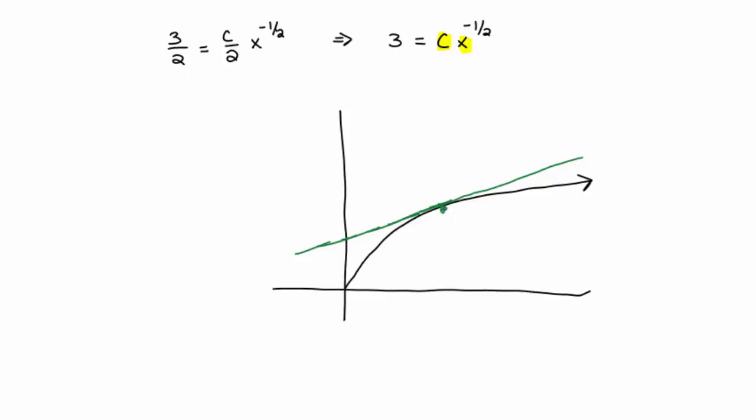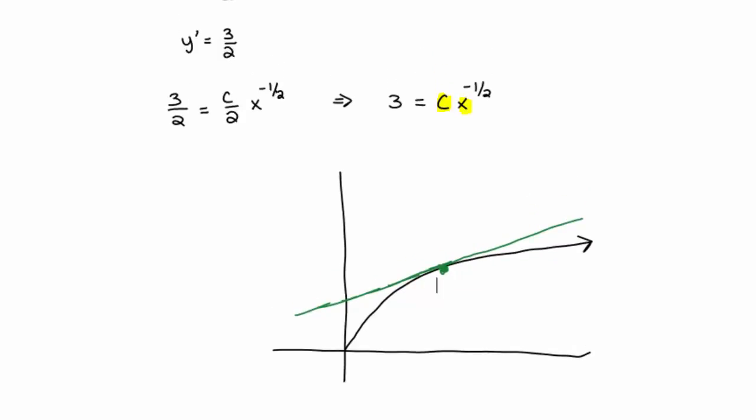Where these two curves, the line and the curve y equals c root x, where they meet, their slopes are the same. And we have that actually taken care of. Where they meet, the slope of the line, 3 halves, is the same as the slope of the curve, which is the derivative right here.